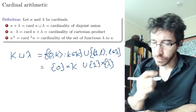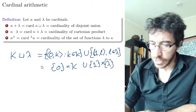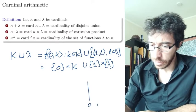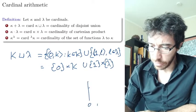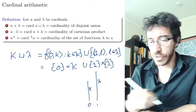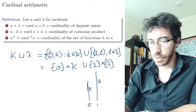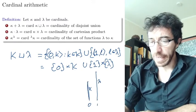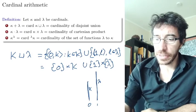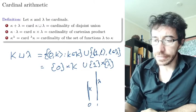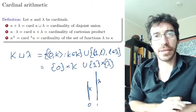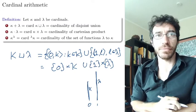So this is essentially these two sets — here is 0, here is 1 — and here we have kappa, here we have lambda. It's the union of these two sets. And the addition of the cardinals is going to be the cardinality of this new set that we build by doing the disjoint union.